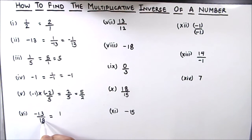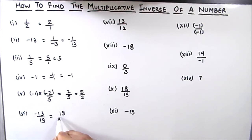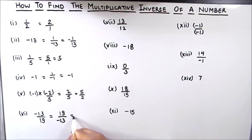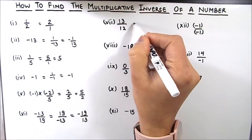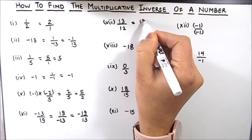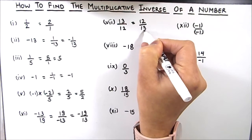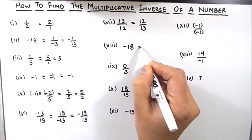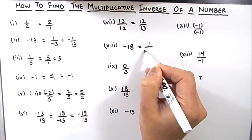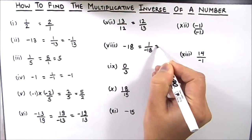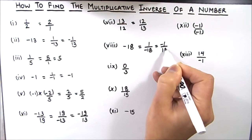The next one is negative 13 by 19 and the reciprocal will be 19 by negative 13, or negative 19 by 13. The next number is 13 by 12 and its reciprocal will be 12 by 13. The multiplicative inverse of negative 18 will be 1 divided by negative 18, or negative 1 by 18.